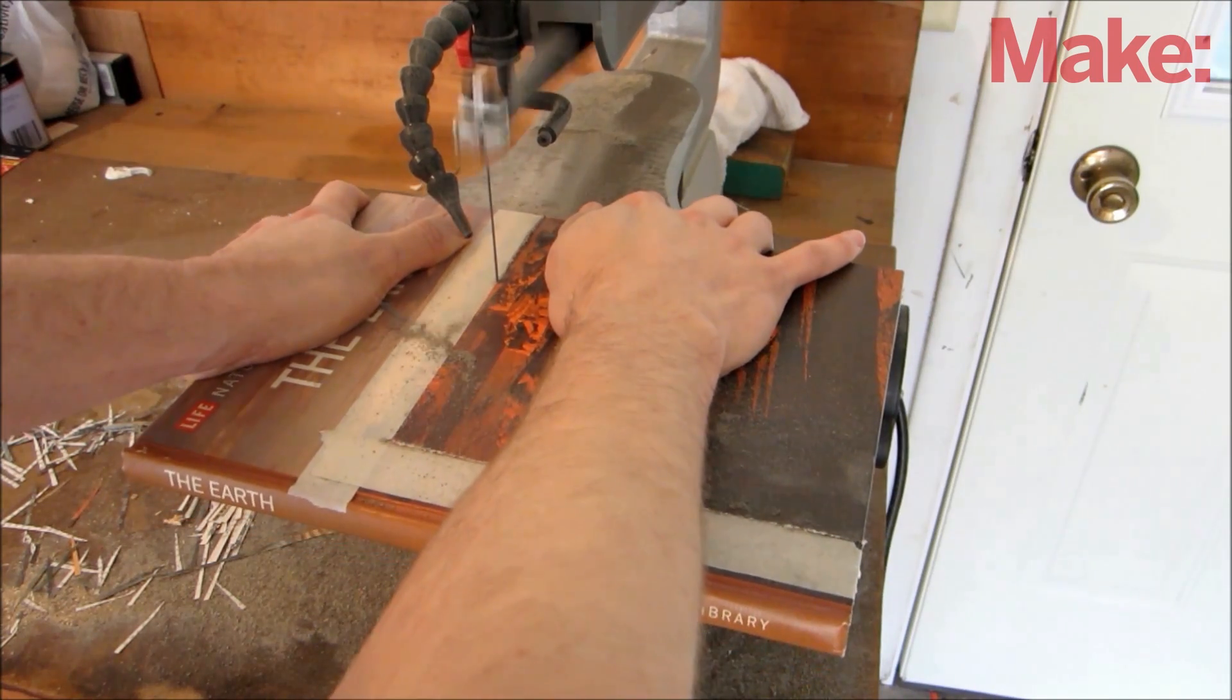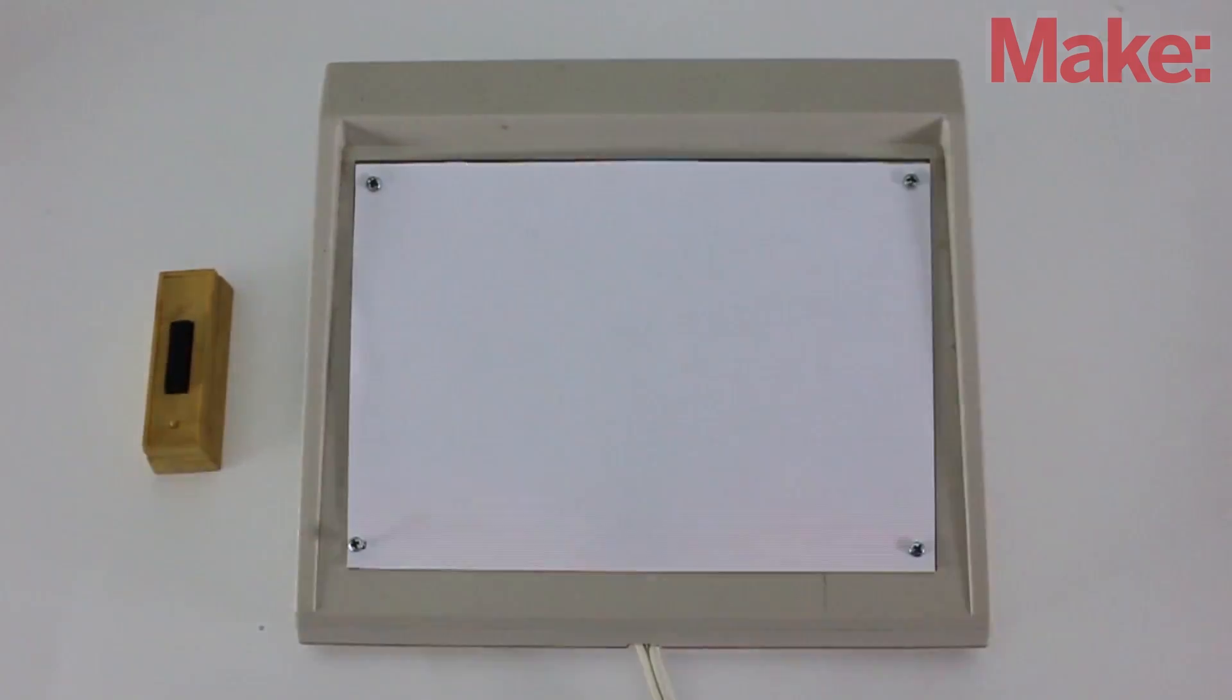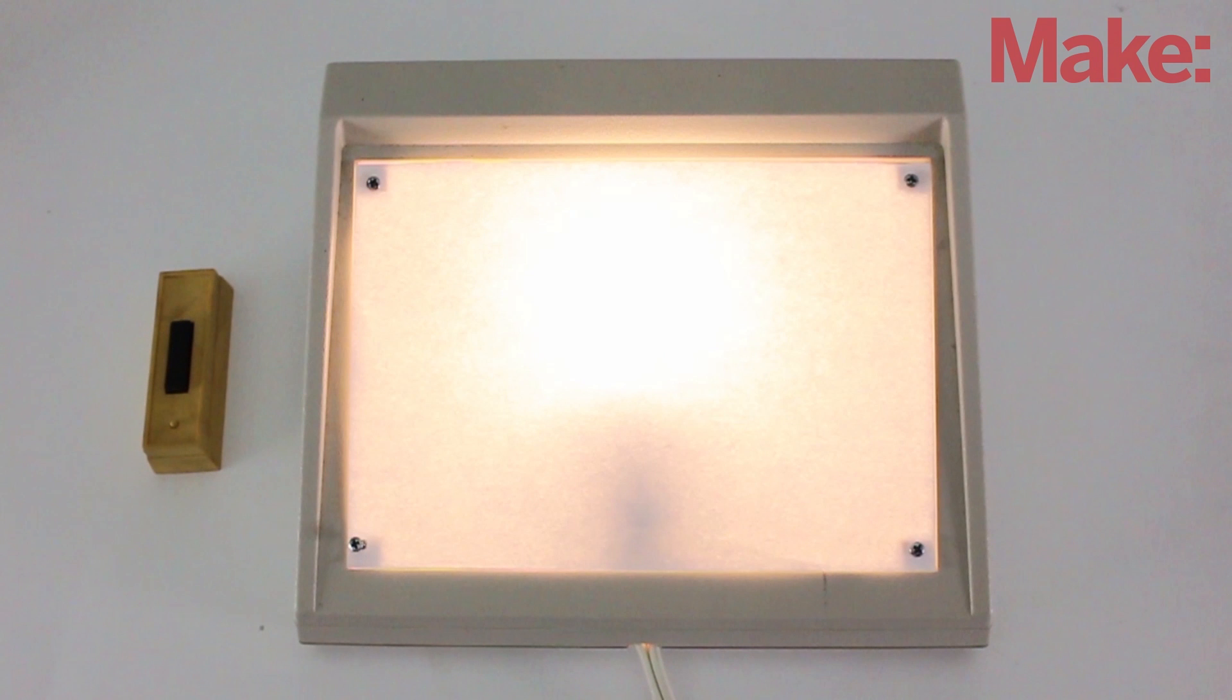Whenever I'm using power tools in my workshop, I can't hear the doorbell ring. So I modified a wireless doorbell so that it turns on a light instead of just playing a tone. Here's how to make one.